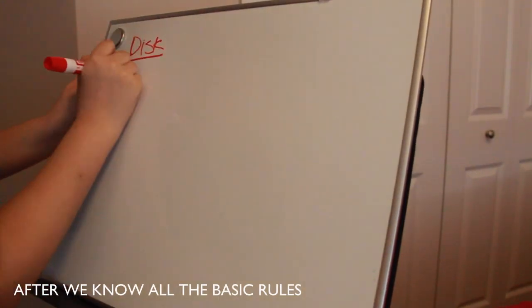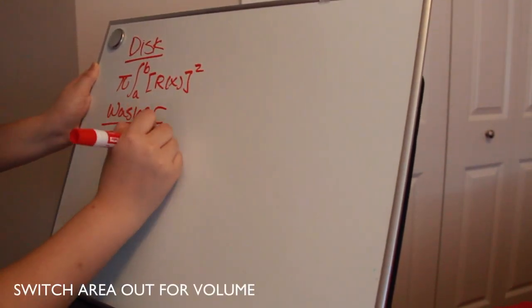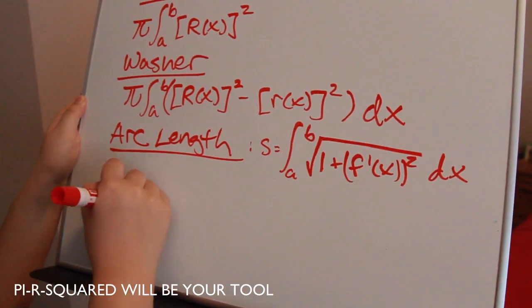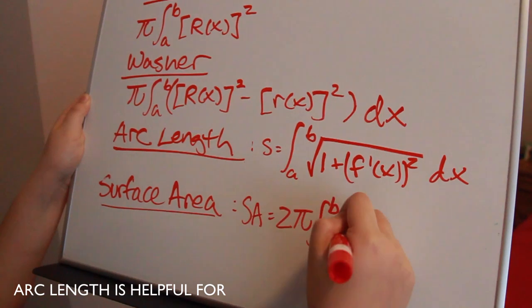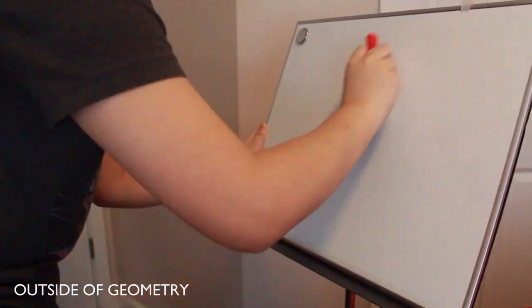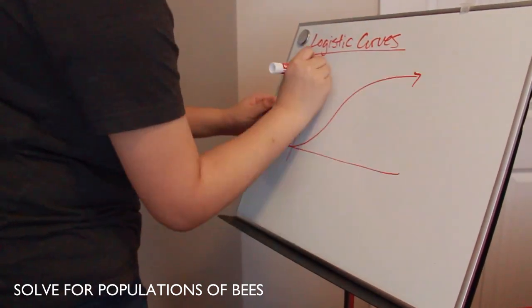After we know all the basic rules, switch area out for volume. Rotate functions like a spool, pi R squared would be your tool. Arc length is helpful for area that's lateral. Outside of geometry, solve for populations of bees.